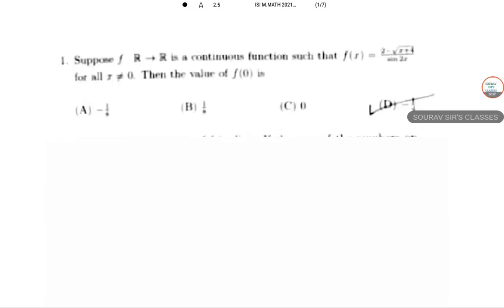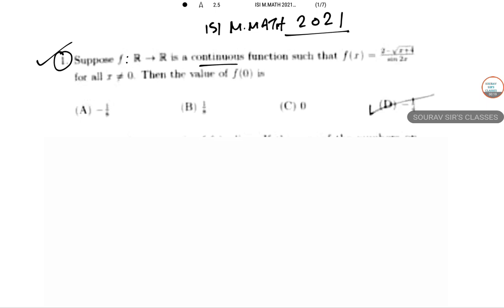Hello dear students, this is ISI M.Math 2021 question number one solution. If f is a continuous function and f(x) equals 2 minus root over (x+4) divided by sine 2x, this is given for all x not equal to 0. Then the value of f(0) is what — so they want us to find the value of f(0).